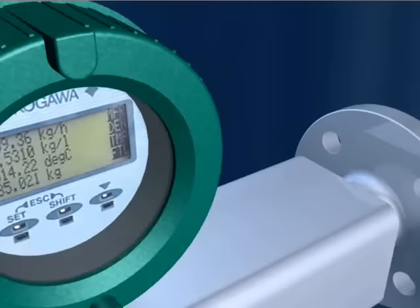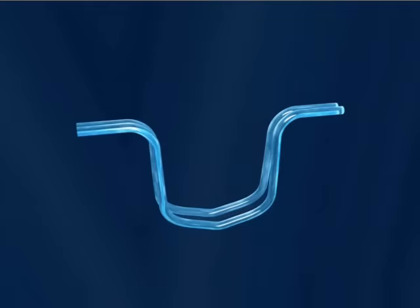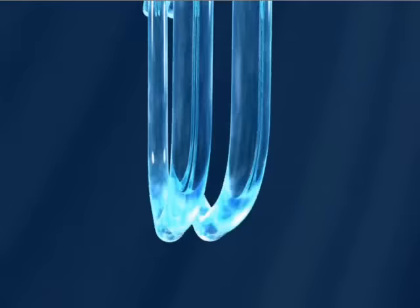A rotamass operates on this principle to deliver the most accurate measuring results. See for yourself. For practical exploitation of this principle, it is sufficient for the two measuring tubes to perform oscillations on a small section of a circular path.